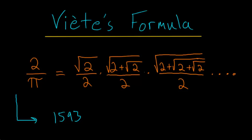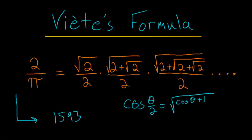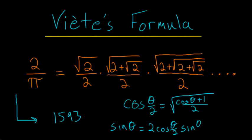The way to derive this formula is by using two different trigonometric identities. The first one is the half angle identity that the cosine of theta over 2 is equal to the square root of the cosine of theta plus 1 divided by 2. The second identity is that the sine of theta is equal to twice the cosine of theta over 2 times the sine of theta over 2. In this video, I will show you how we can derive these identities using Euler's formula, and in the next video I'll show how to use these identities to derive this formula found by Viète.